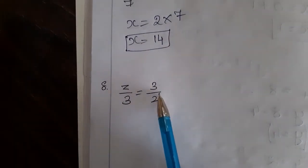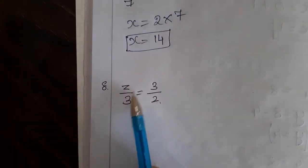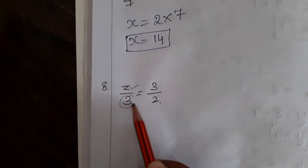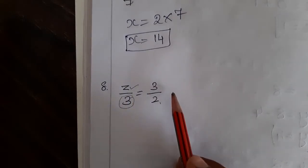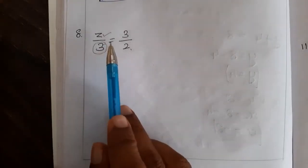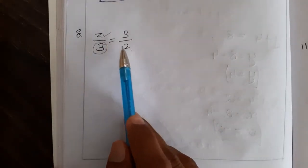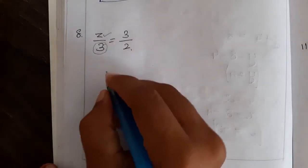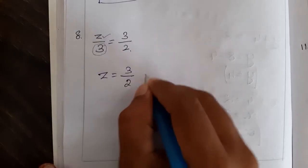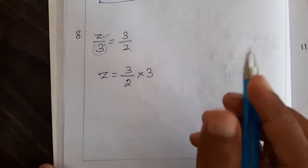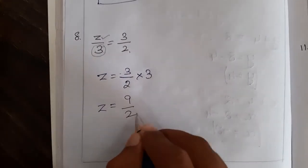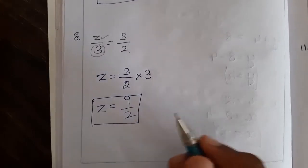Next problem: z by 3 is equal to 3 by 2. We need to find the value of z. And 3 is divided, so let me transpose 3 to that side. Division will become multiplication. So z is equal to 3 by 2 into 3. We can multiply the numerators: 3 times 3 is 9. The answer is 9 by 2. Value of z is 9 by 2.